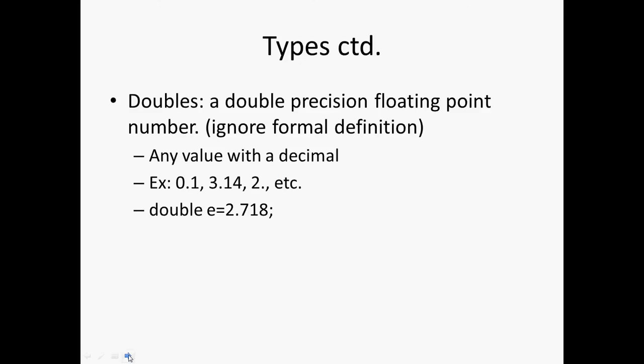Okay, doubles. Those are double precision floating point numbers. That's where they got the name double. Floating point numbers, well, you can ignore the formal definition. It'll pretty much just be anything with a decimal. So 0.1, 3.14, 2 points. That'll make it a double, etc., and so forth.